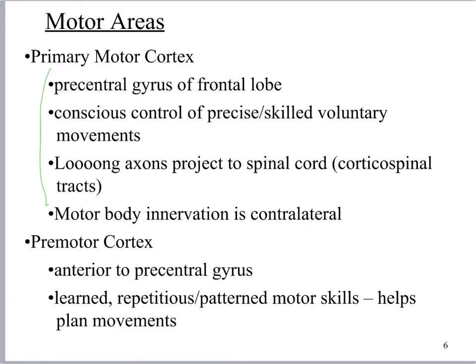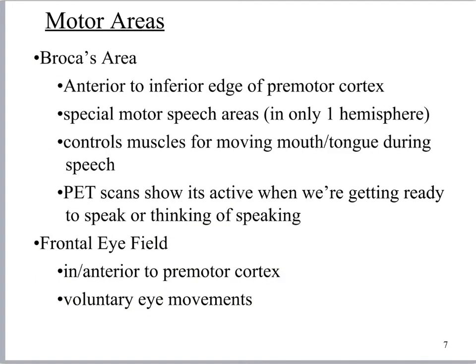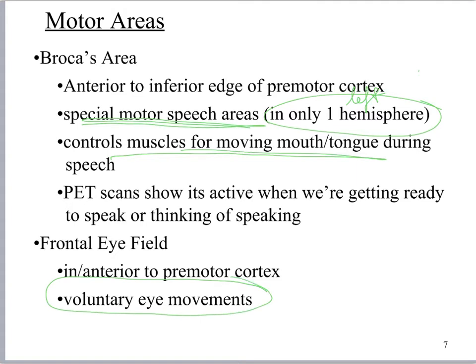Here's what your primary motor cortex does and here's how the premotor cortex is a little bit different. Broca's area is interesting — we also have a Wernicke's area. Broca's area is a special motor area for speech and it is only found in the left hemisphere, which is very interesting. It controls muscles for moving the mouth and tongue during speech. When people have strokes and have difficulty speaking, it helps doctors realize the stroke occurred in their left hemisphere because Broca's area is only in the left. The frontal eye field is doing voluntary eye movements processing.